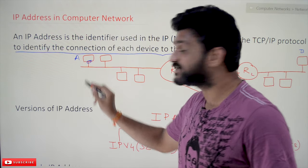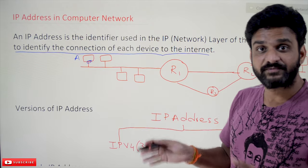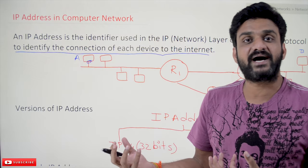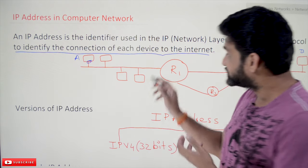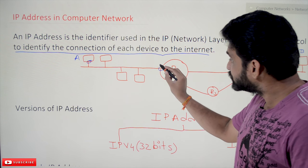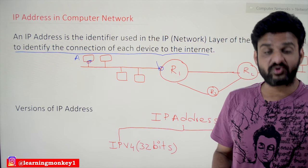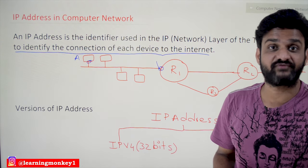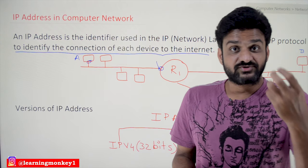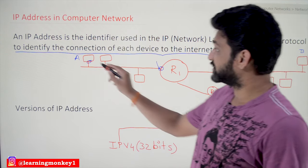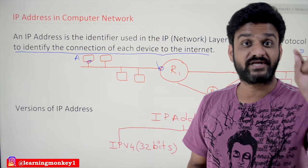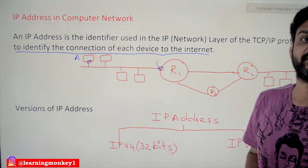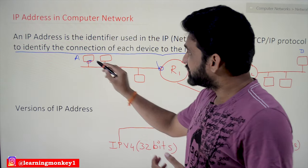An IP address identifies the connection of each device to the internet. It may be a host, a computer, or a router — routers also get connected to the internet. This entire network gets connected through the router. For better visualization, think of the pin you put into the computer: that pin, that connection point, is what has the address — not the computer itself. The computer does not have the IP address; it is the connection point that is identified.